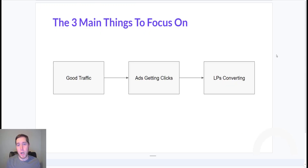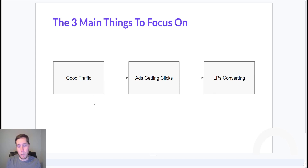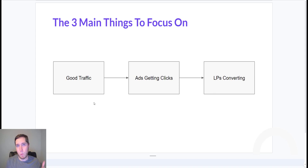To kick things off, I wanted to go over a couple of slides to illustrate things more visually. Really getting success on Google Ads comes down to a few key buckets you need to focus on. You need to get good traffic from Google — people searching for 'auto detailing near me,' 'car detailing near me,' 'mobile auto detailing,' or auto detailing in your location. That comes down to keywords, negative keywords, and all that kind of stuff.